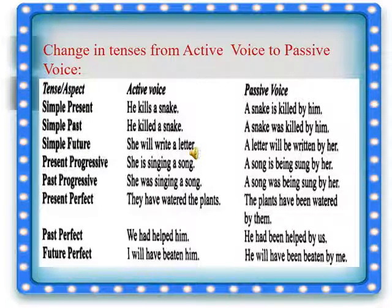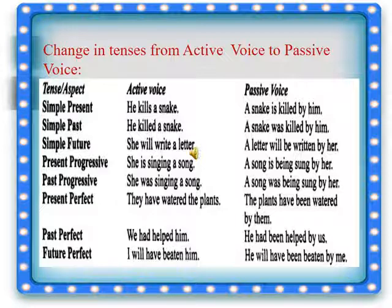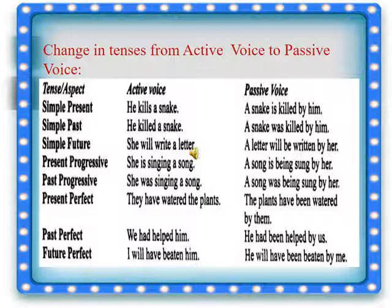Let us see the change in tenses from active voice to passive voice. Simple present tense: 'He kills a snake' becomes 'A snake is killed by him.' Simple past: 'He killed a snake' becomes 'A snake was killed by him.' Simple future: 'She will write a letter' becomes 'A letter will be written by her.' Present progressive, that is present continuous tense: 'She is singing a song' becomes 'A song is being sung by her.'